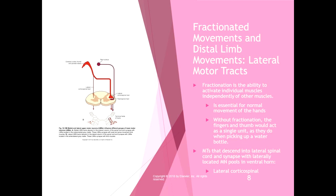Fractionated movements and distal limb movements happen in the lateral motor tracks. Fractionation is the ability to activate individual muscles independently of other muscles, and it's essential for normal movement of the hands. Without fractionation, the fingers and thumb would act as a single unit — like when you pick up a water bottle — instead of being able to type on a keyboard, play the piano, or perform precision grips. Motor tracks that descend into the lateral spinal cord and synapse with laterally located motor neuron pools in the ventral horn are in the lateral corticospinal tract.